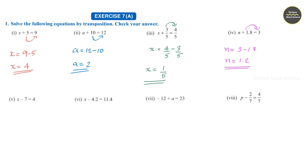Fifth question: h minus 7 is equal to 4. Here we can take this minus 7 to the RHS.